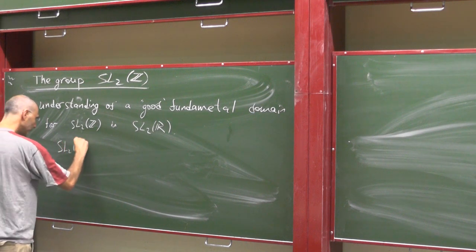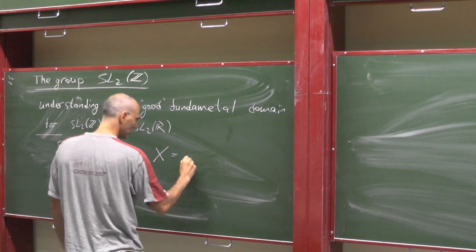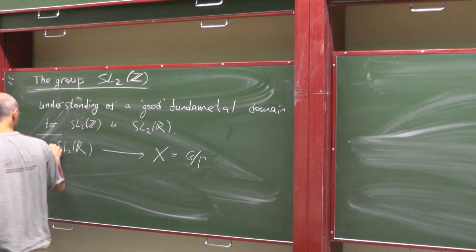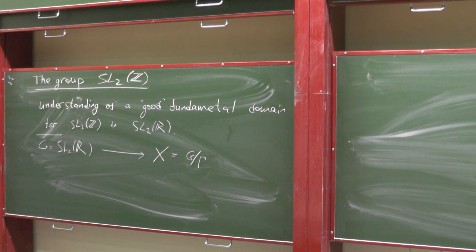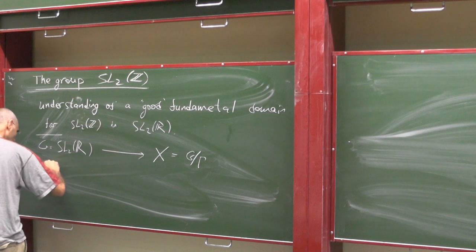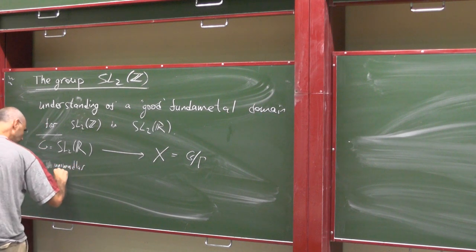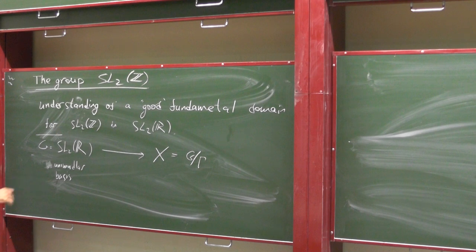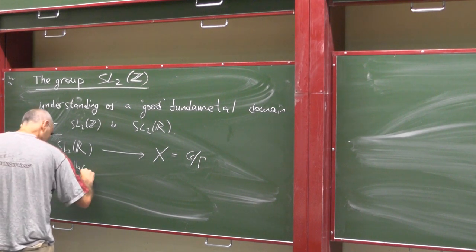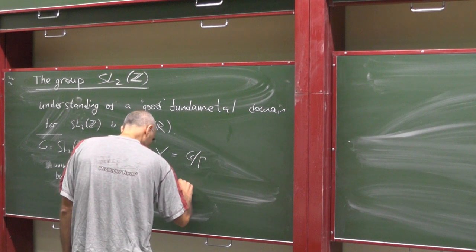Take SL2R and consider this map. We are looking for a section of that map. An element here would be thought of as unimodular basis - the rows of the two-by-two values, the unimodular basis of R2. And the map here is just taking its Z span.